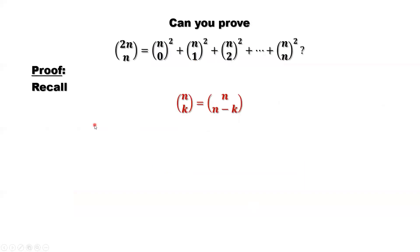First of all, recall a basic result, basic identity: n choose k equals n choose n minus k. Those two combination numbers are equal. We can also use the committee model to describe this simple identity.